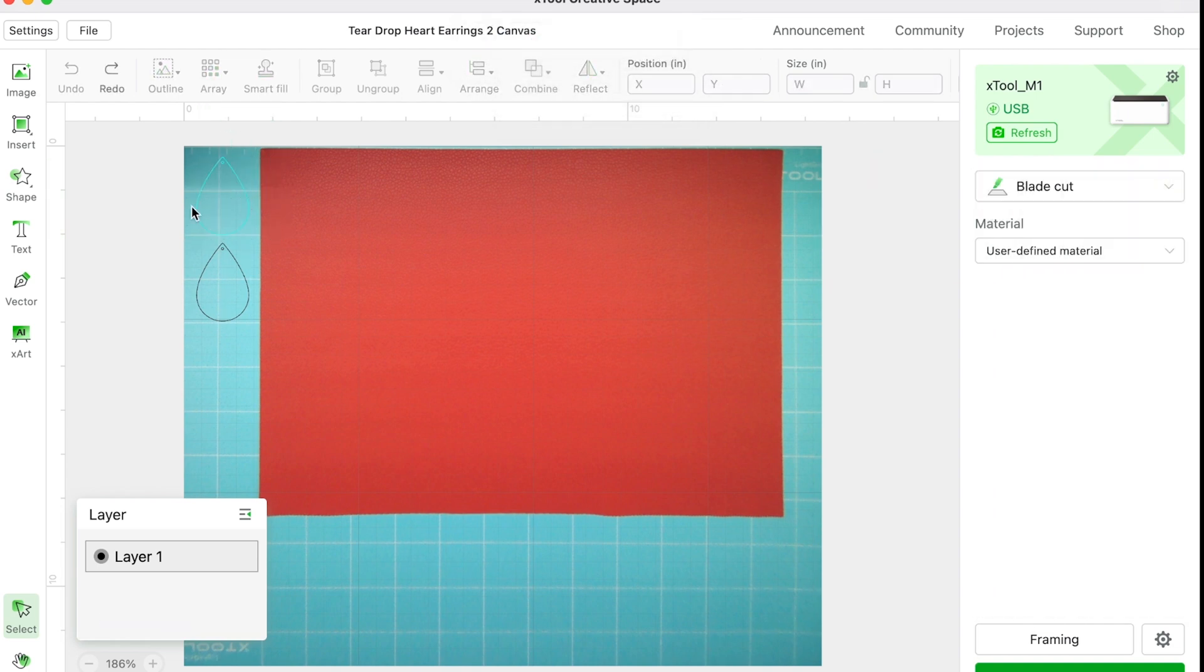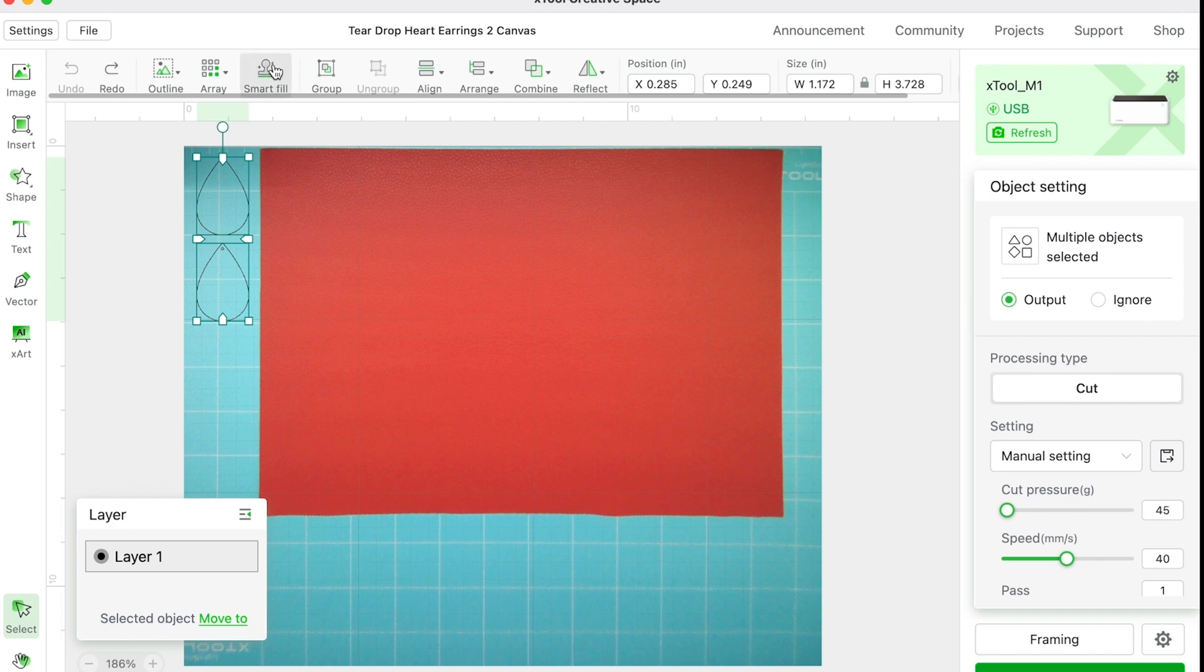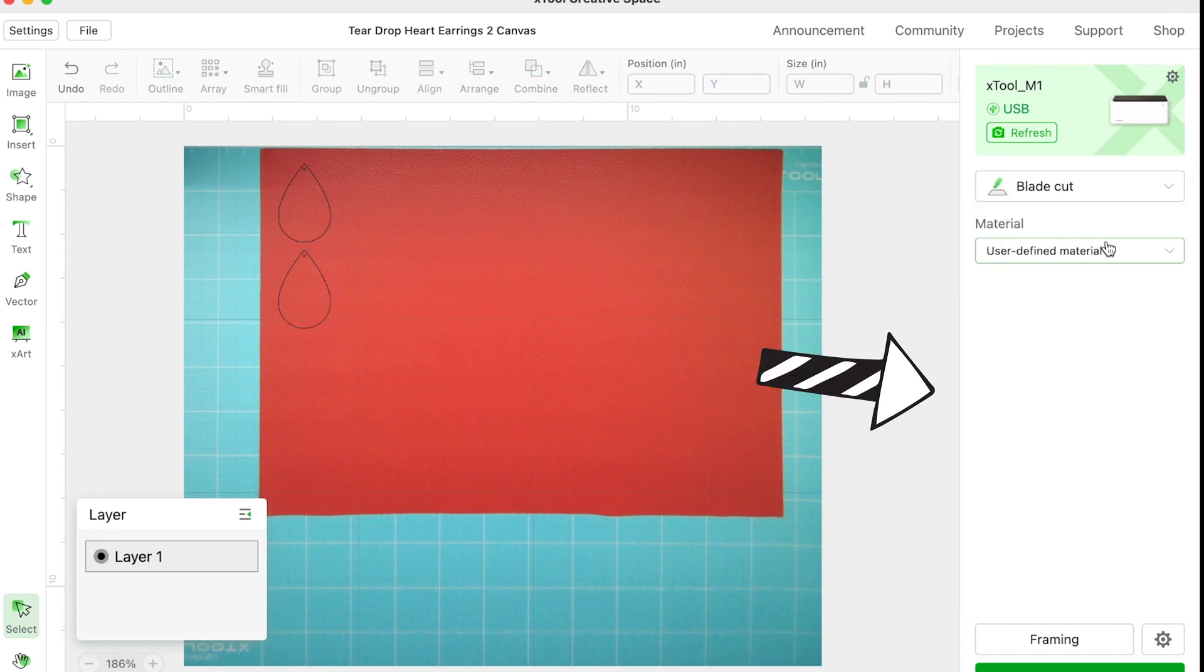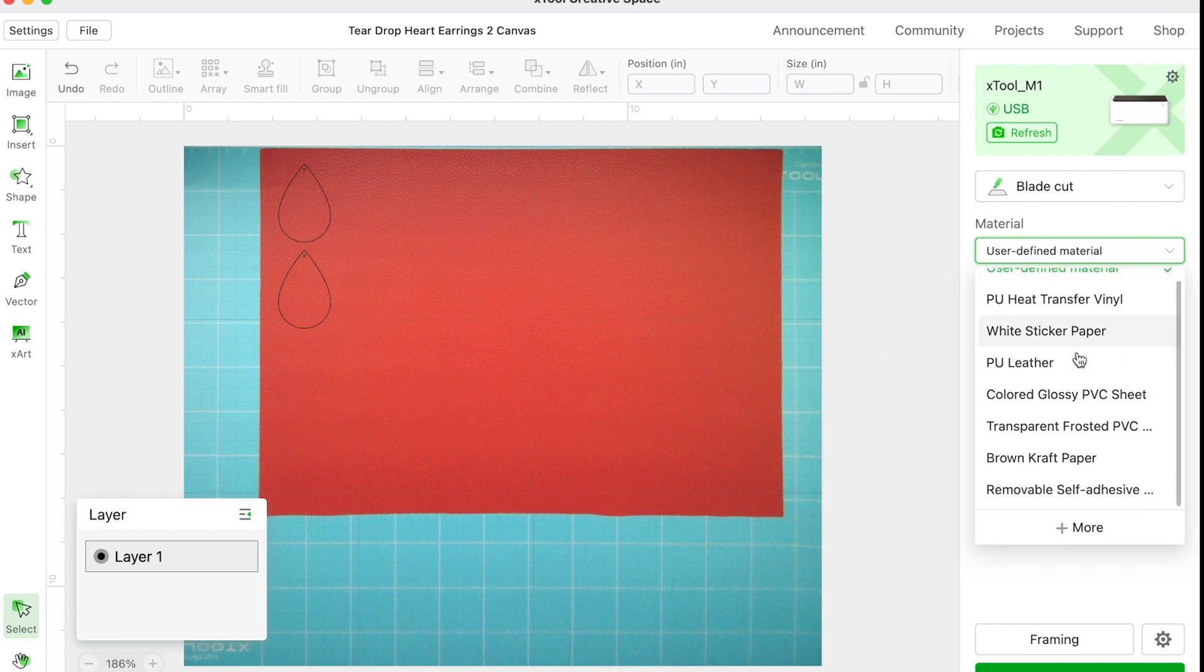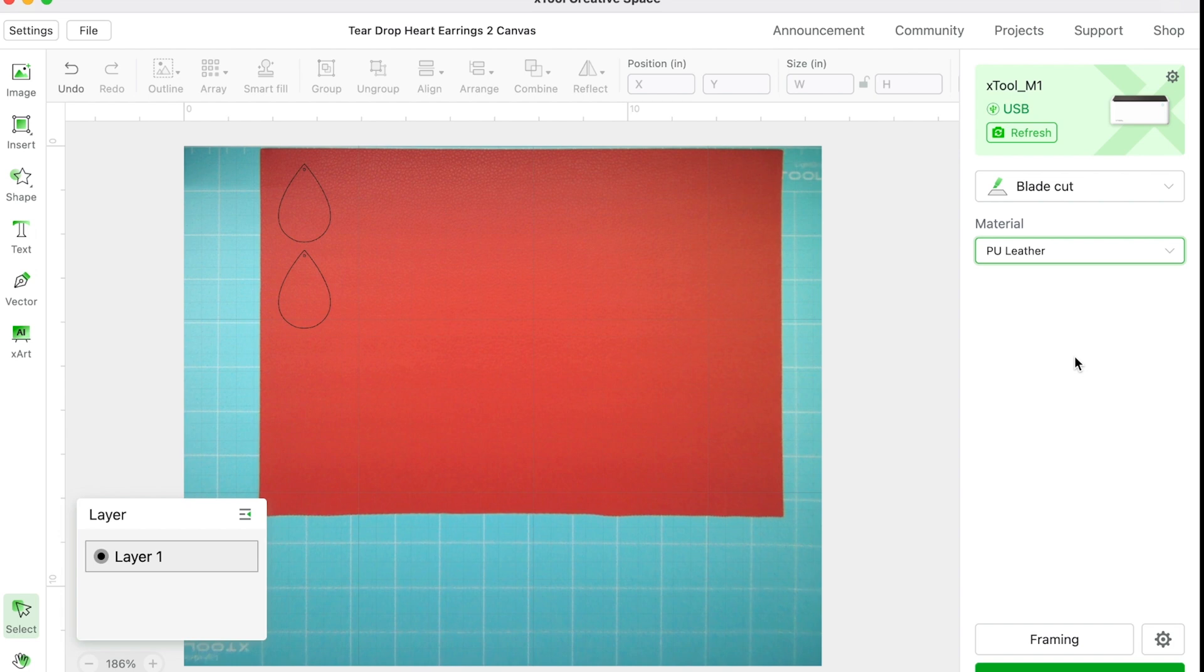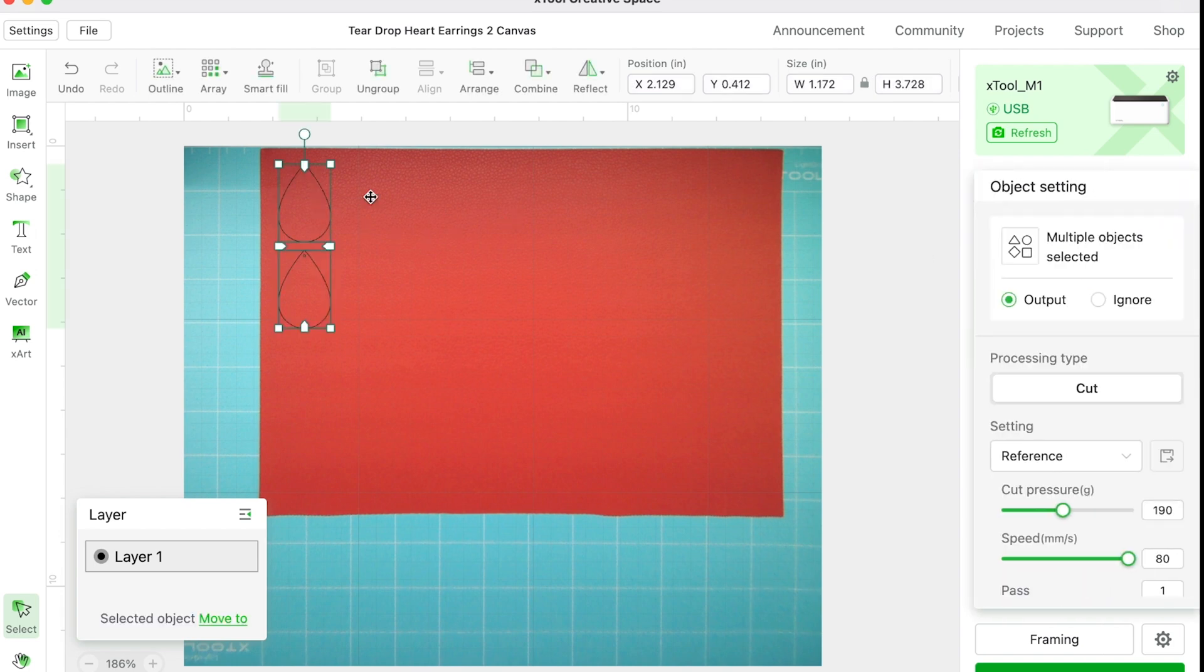Similar to other proprietary software you can group things together. You can layer things. You can send front to back. You can align them. It is a very simple tool to use. Now I do have a pop-up menu over here that will go away when I click off the actual items I was moving around.